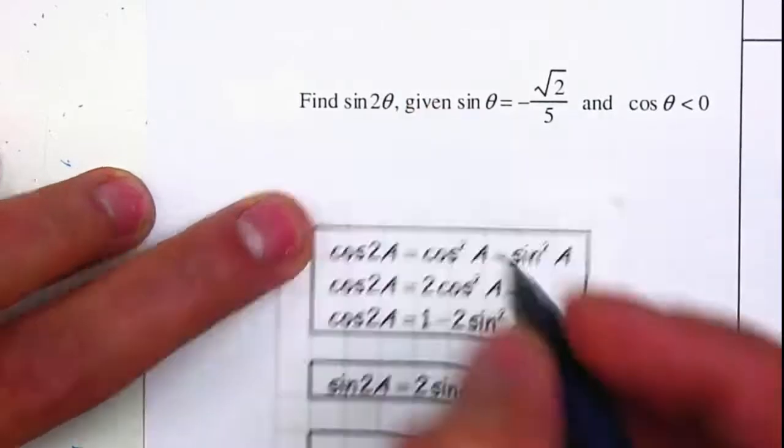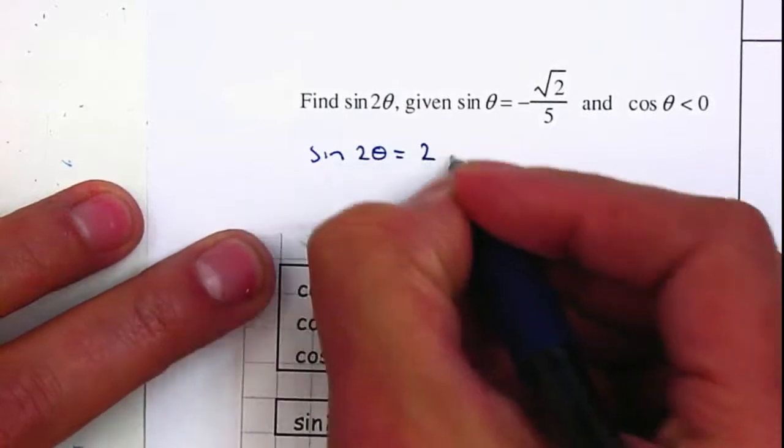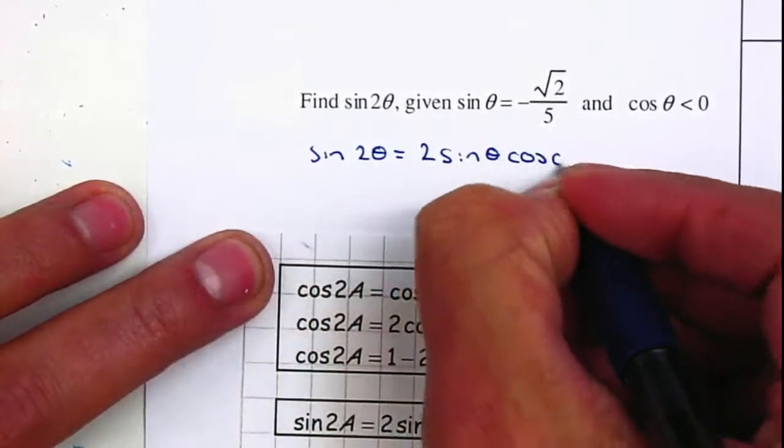Instead of A, I'm going to write down θ. So we have sin 2θ equals 2 sin θ cos θ.